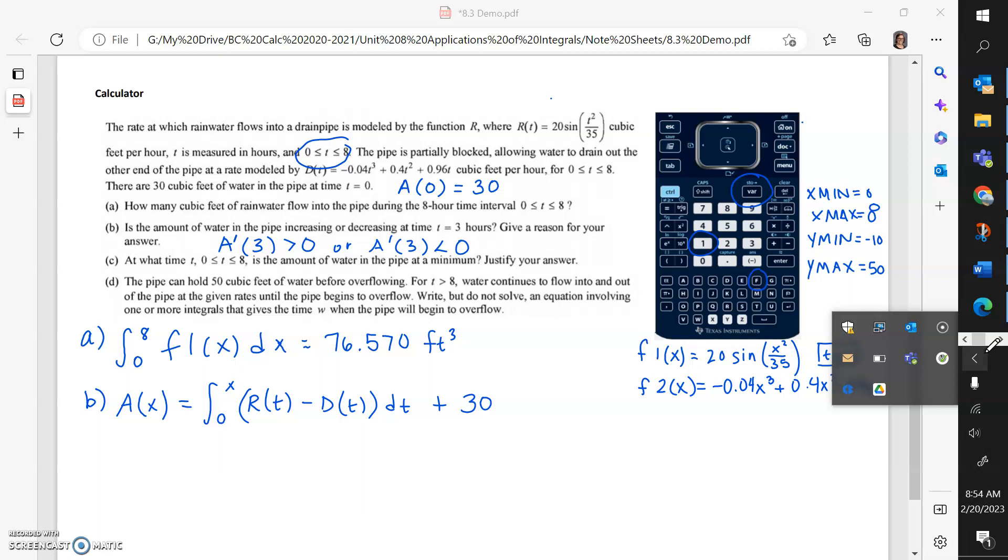I'm going to make the amount equation. The amount equation is going to be the definite integral from 0 to x of the rate flowing into the pipe minus the rate flowing out of the pipe plus the initial amount, which was 30. This is my accumulation function, and now I can use that to talk about increasing or decreasing.